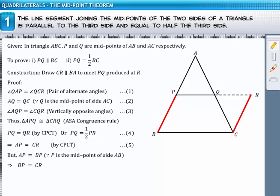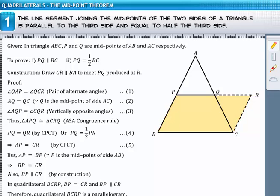Also, by construction, BP is parallel to CR. Thus, in the quadrilateral BCRP, we have a pair of opposite sides, BP and CR, that are equal and parallel. This implies, quadrilateral BCRP is a parallelogram.